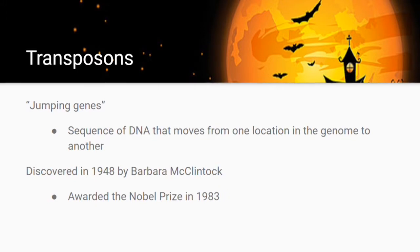Transposons are also called jumping genes because they move from one location in your genome to another. They were discovered in 1948 by Barbara McClintock. When she first proposed that the genome is not static but can move around, the scientific community thought it was a crazy idea and didn't believe her. But in later years it was validated, and she was eventually awarded the Nobel Prize in 1983 for this discovery.